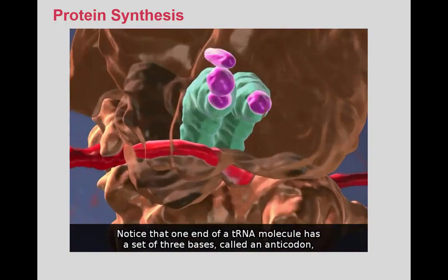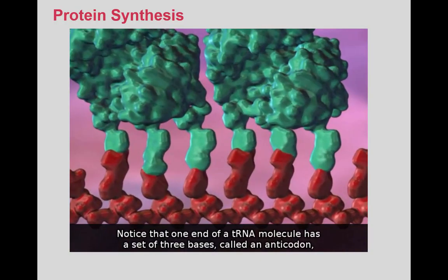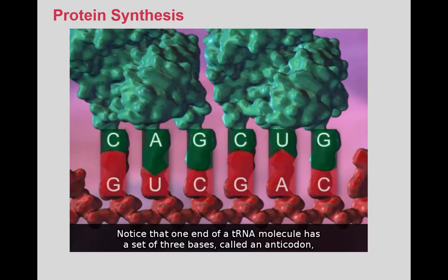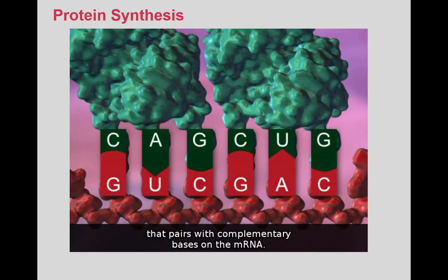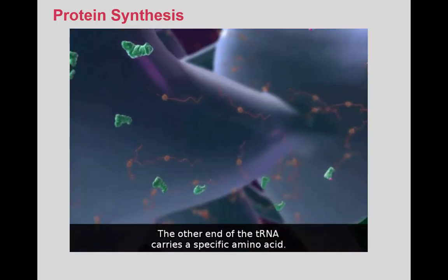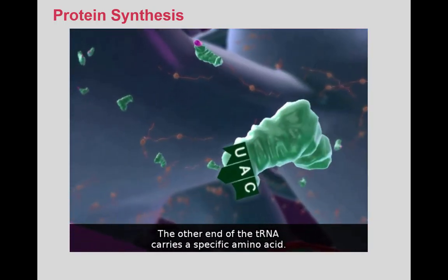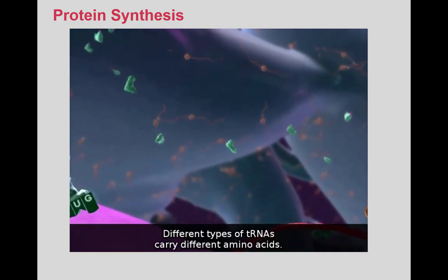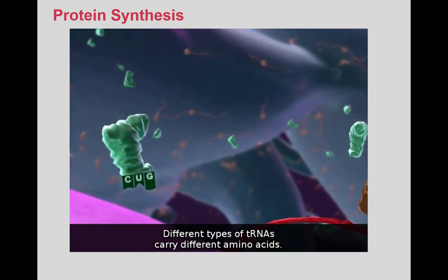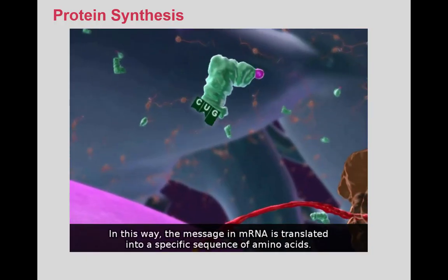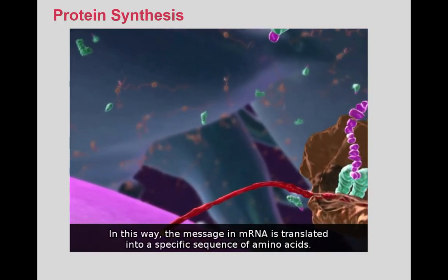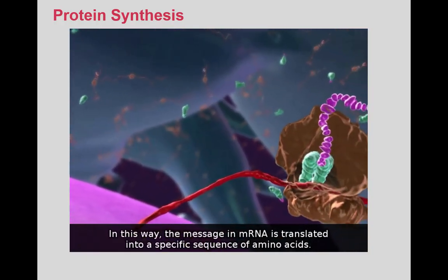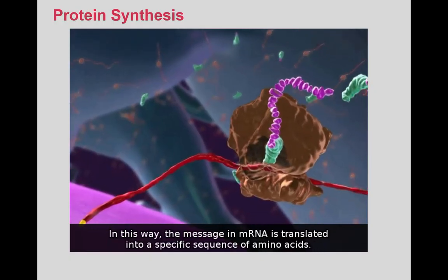Notice that one end of a tRNA molecule has a set of three bases, called an anticodon, that pairs with complementary bases on the mRNA. The other end of the tRNA carries a specific amino acid. Different types of tRNAs carry different amino acids. In this way, the message in mRNA is translated into a specific sequence of amino acids.